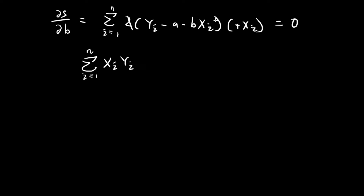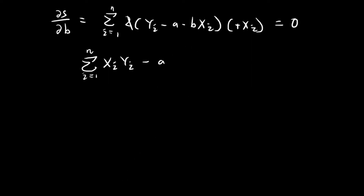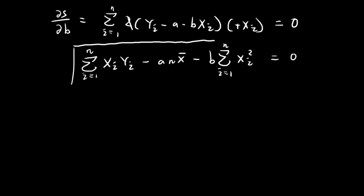So now we have: the sum of xi times yi, minus A times the sum of all the x terms (expressed as n times the sample mean of x), minus B times the sum of xi squared, equal to 0. This will be our second condition.